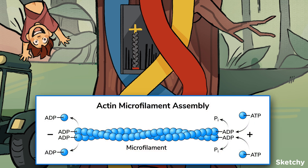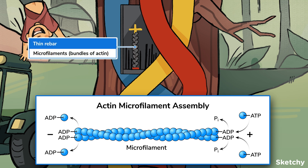First, we've got actin. Actin monomers often assemble into microfilaments, which have multiple functions in the cell from cell movement to cell signaling. Actin microfilaments are important parts of the cytoskeleton, and this thin rebar holding up the treehouse looks just like a microfilament made of those globular actin subunits. Let's hope it supports and protects those kids the same way that microfilaments support and protect our cells.